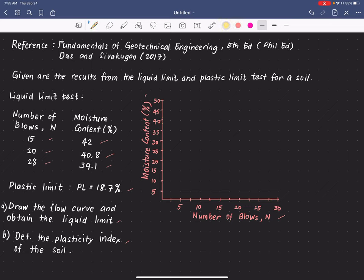For our first data point, the N value or the number of blows is 15 here, and this has a corresponding moisture content of 42. So we go up going to the moisture content of 42. So it's somewhere here and their intersection is our first data point.